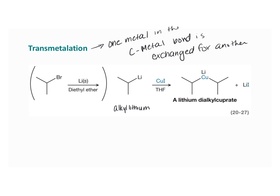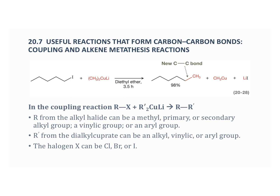In previous chapters, we saw how these organometallic species are instrumental in valuable reactions that form new carbon-carbon bonds. In this chapter, we are going to introduce some new carbon-carbon bond-forming reactions that rely on organometallic species either as reagents or intermediates. The first few we'll discuss are coupling reactions and alkene metathesis. Reactions that form new carbon-carbon bonds are valuable in constructing the carbon skeleton of a synthetic target.